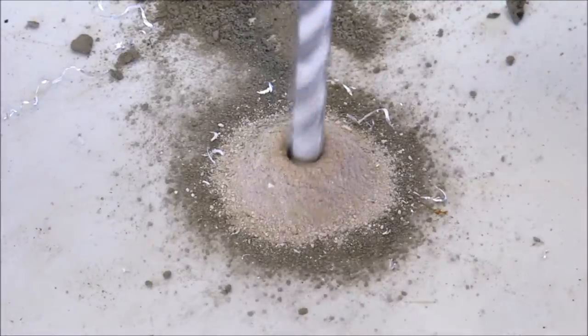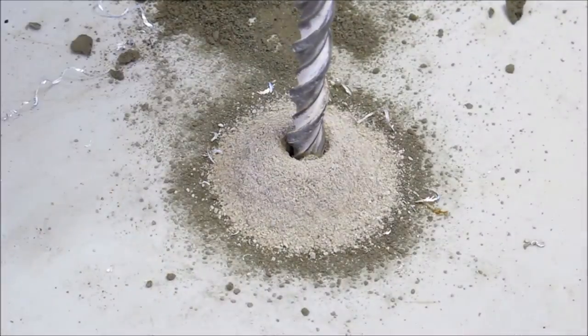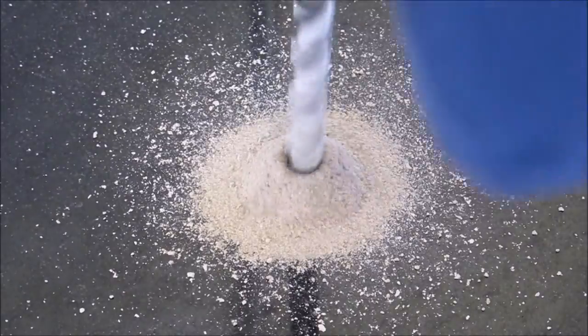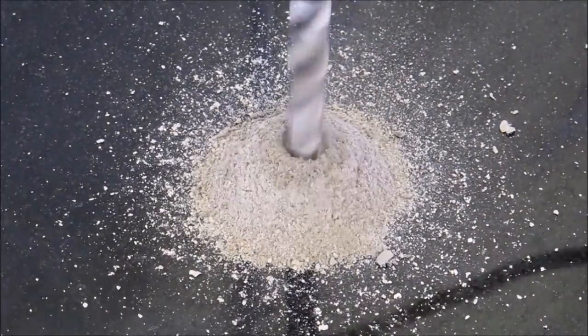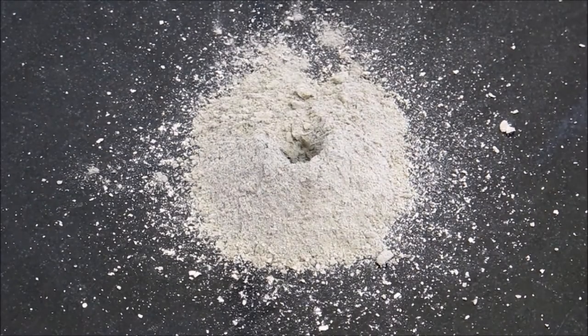I then drilled holes in the cement for the anchors. I used my previous drip pan as a template to make sure the holes were exactly in the right spot. I used an SDS hammer drill with a boss drill, and it worked very well.